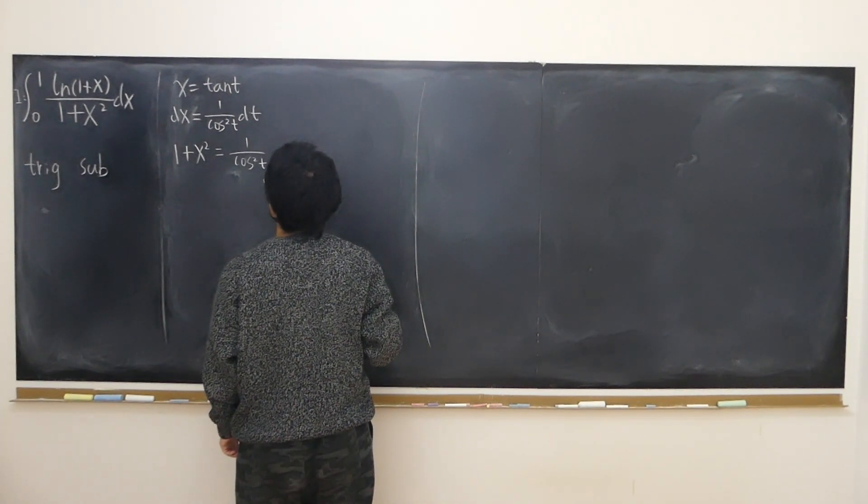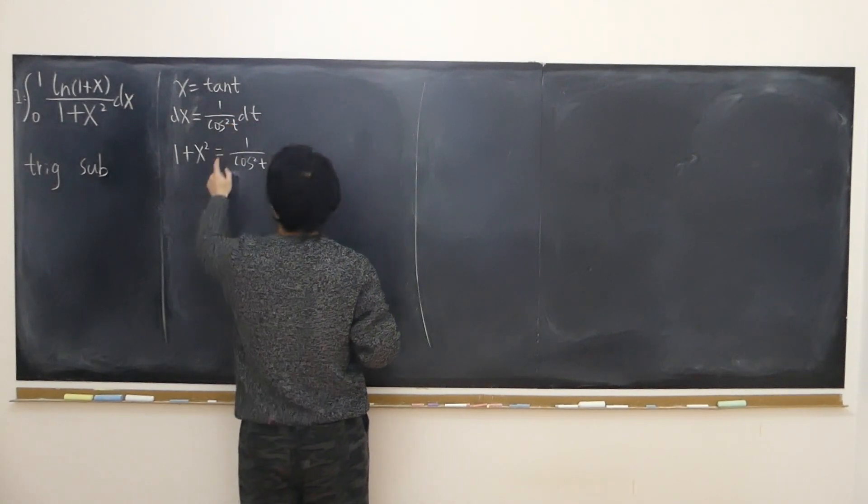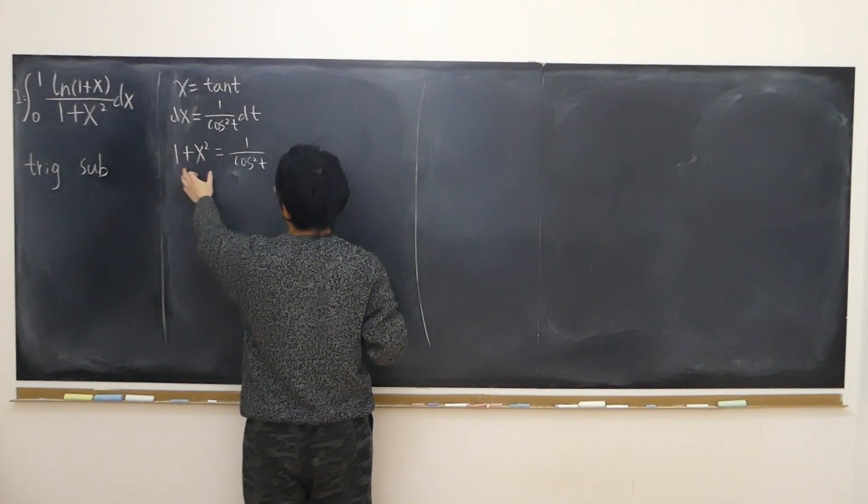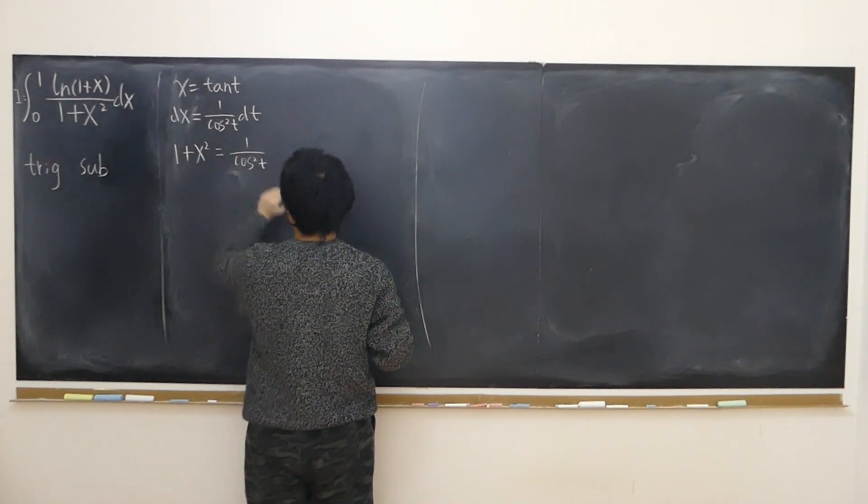That's just a trig identity because tangent t is sine over cosine, so that's sine squared over cosine squared and becomes cosine squared plus sine squared that is 1, 1 over cosine squared.